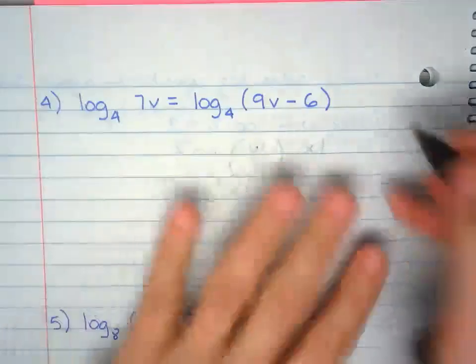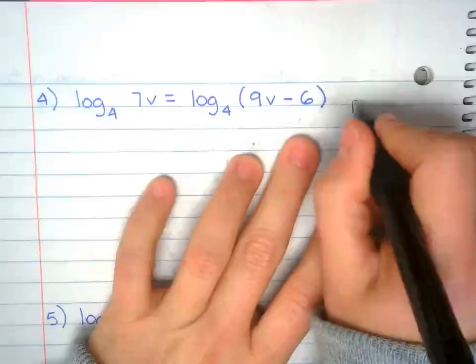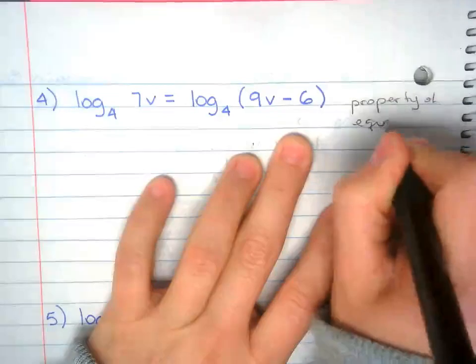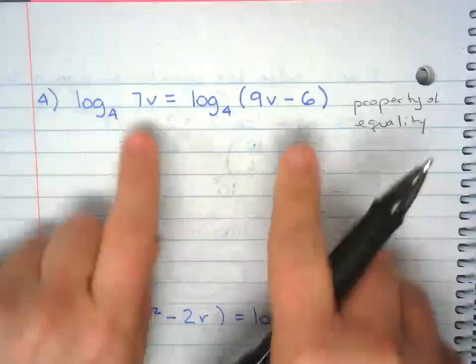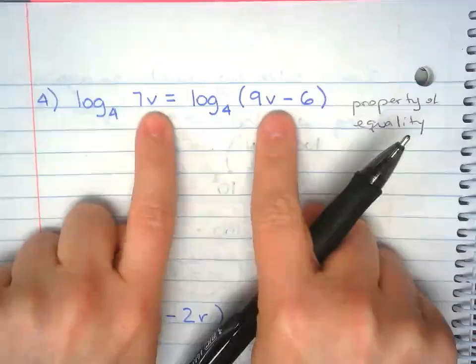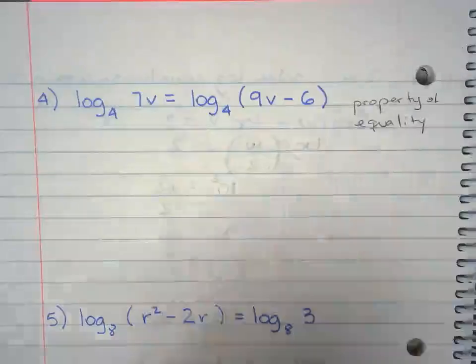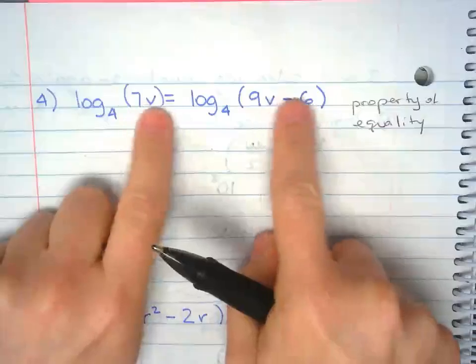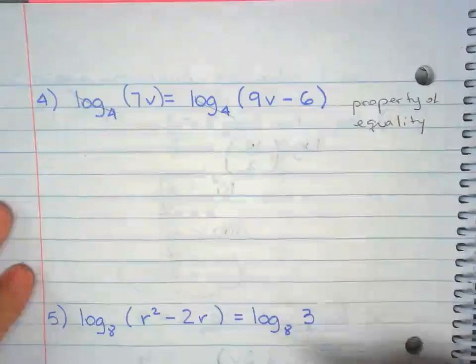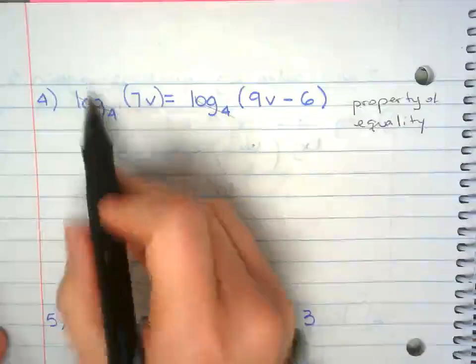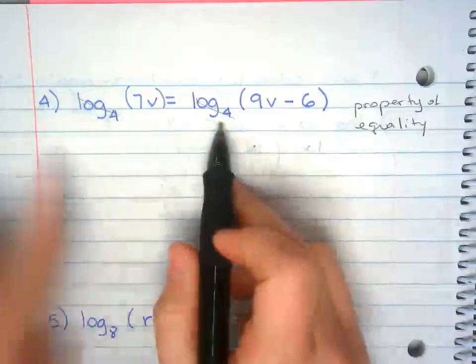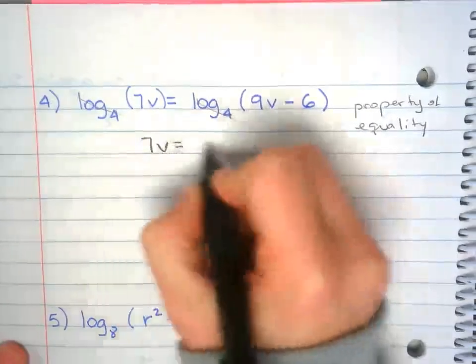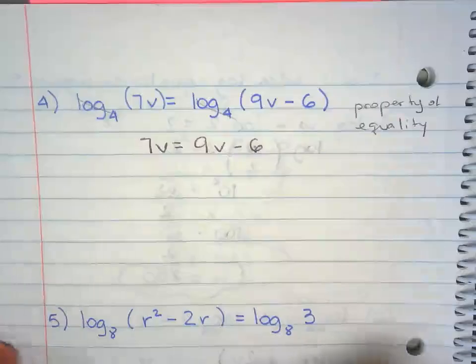So this one, we're also applying the property of equality, which states the expressions inside the logs are equal. So these two are equal to each other. Or it's the same as dividing both sides by log base 4. Now we're solving for v.